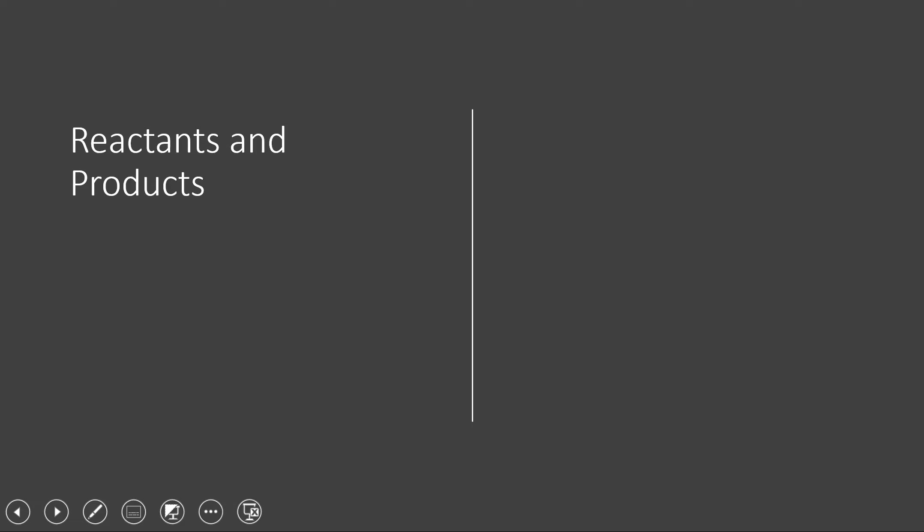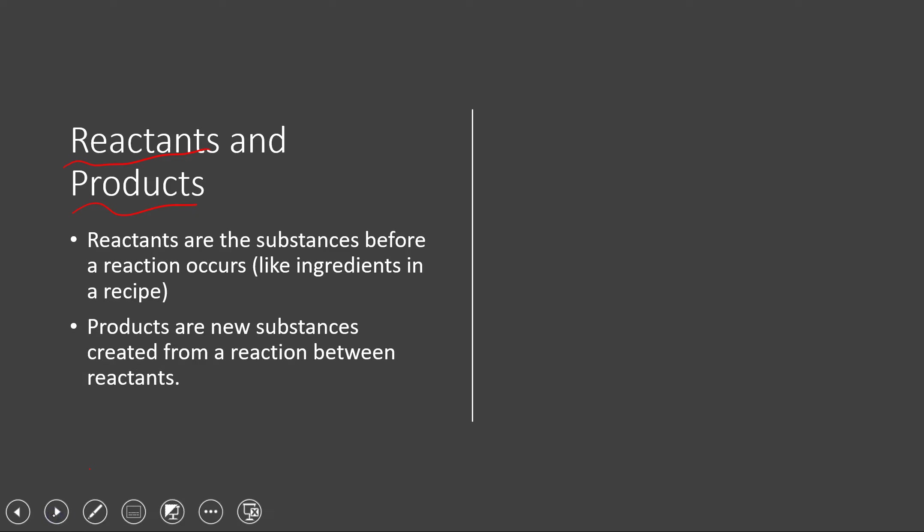A couple important terms that we have to have and get solid in our brains first is reactants and products. So the basic way to put this is the reactants are whatever the form the substances are in before a reaction occurs. The products therefore would be the new form that those substances take after a reaction. So reactants are kind of like the ingredients if you're baking a cake or whatever, right, the form the substances are in before a reaction occurs.